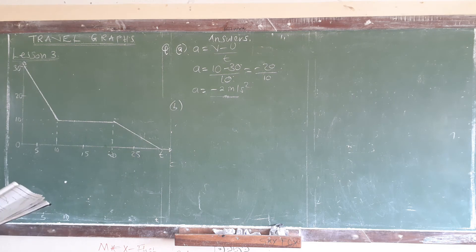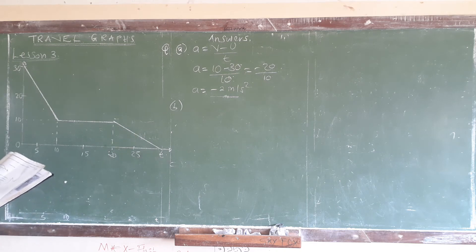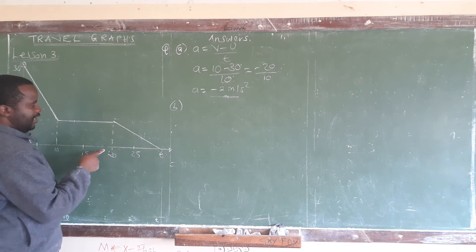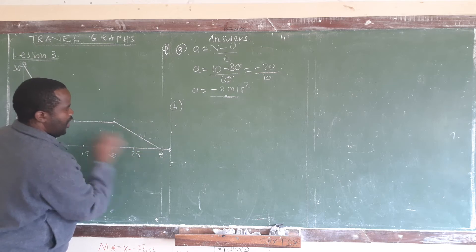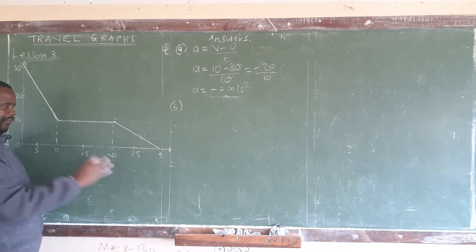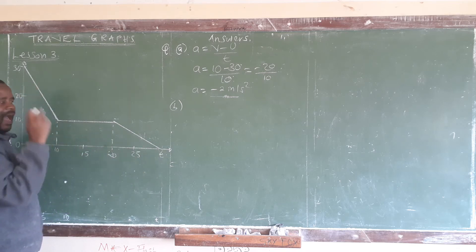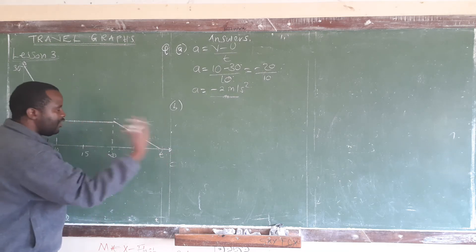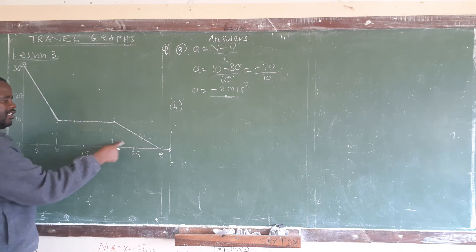Part B asks us to calculate the value of t if the particle traveled 150 meters in 20 seconds. So we want to find t given that the distance covered is 150 meters. Since we are thinking about distance, we apply the formula for finding area. Looking at the shape, we have a triangle, and the area of the triangle represents the distance.